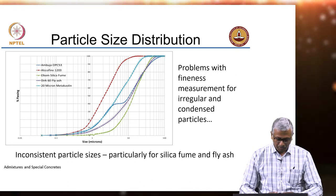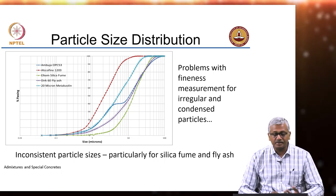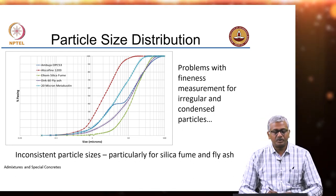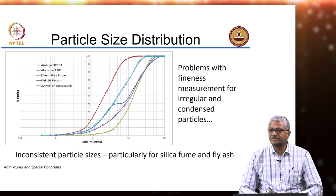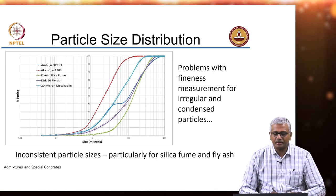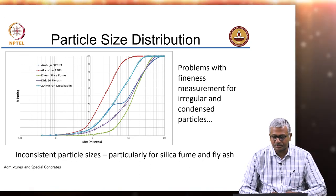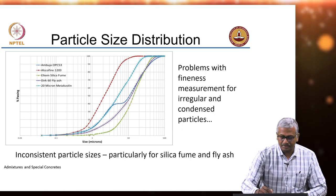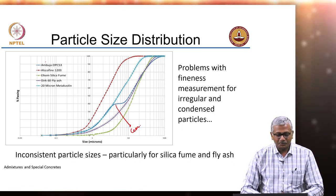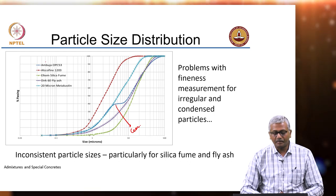One of the important things to characterize whenever you get a mineral additive is the particle size distribution. It is very important to see how these compounds are distributed with respect to the particle sizes of your principal binding material, that is cement. This is only one example from one of the research projects we had done. You can see the cement is represented here — the blue line is that of OPC-53 in terms of its particle size distribution.